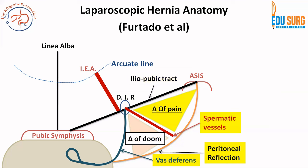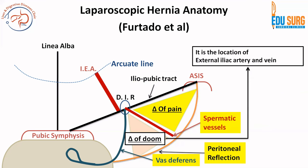The triangle of doom is medial to the triangle of pain. Its boundaries are: spermatic vessels laterally, vas deferens medially, and peritoneal reflection inferiorly. It is known as the triangle of doom because this is the area where the external iliac artery and veins pass beneath. No tacker should be applied in this area. It is easy to remember that the triangle of doom is medial because the Y stalk is formed by the inferior epigastric artery, which is a branch from these vessels, so the external iliac artery and veins are logically located medially.